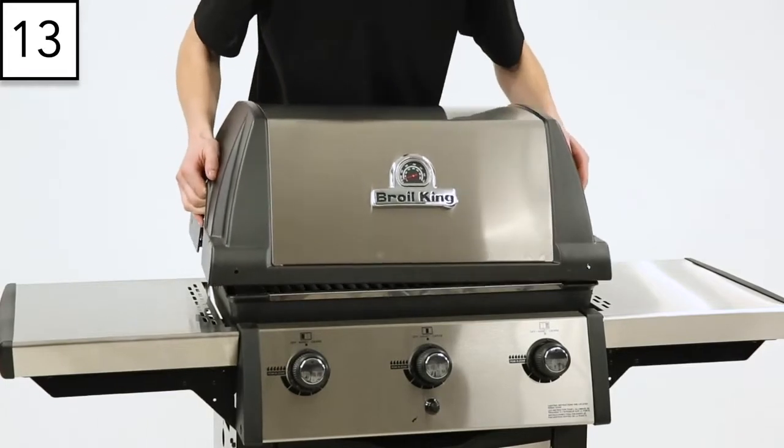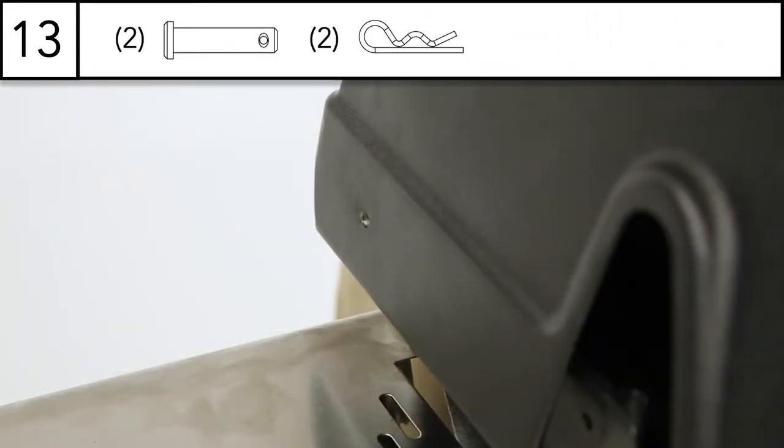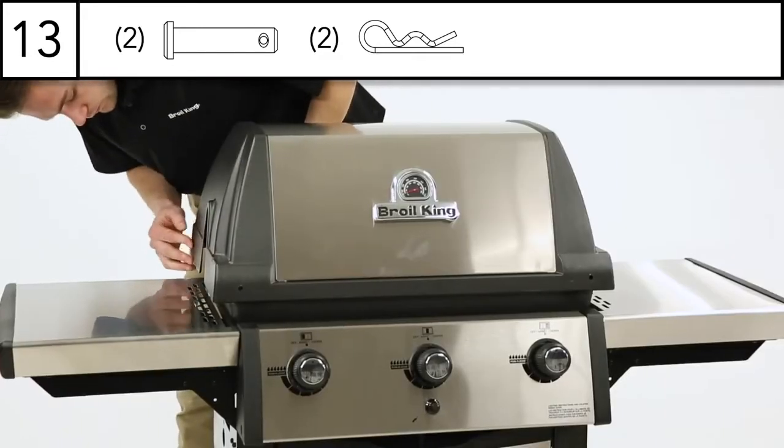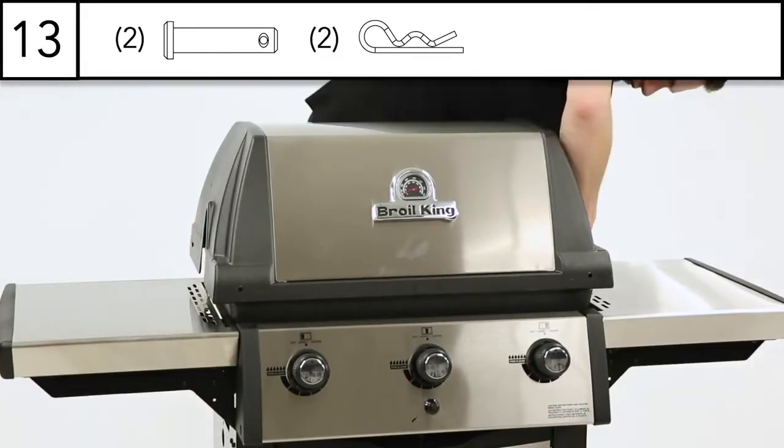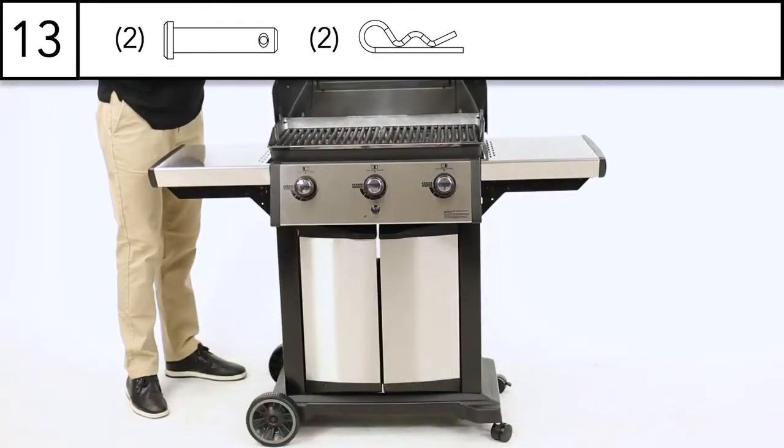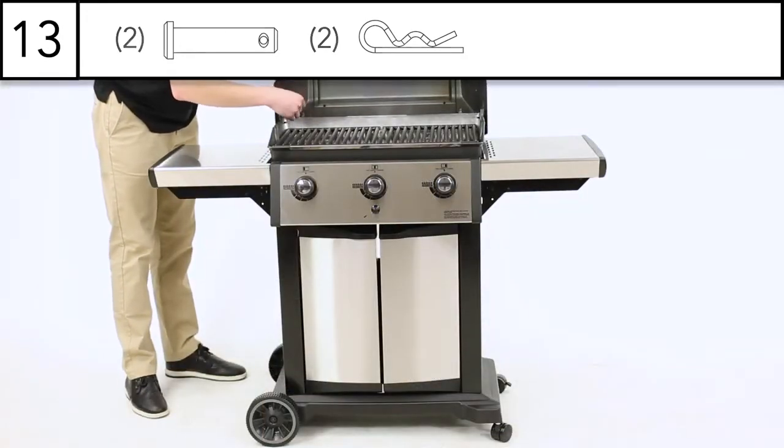Install the lid on your grill. Insert a roll pin through either side of the lid and cook box, then secure in place with the cotter pin.